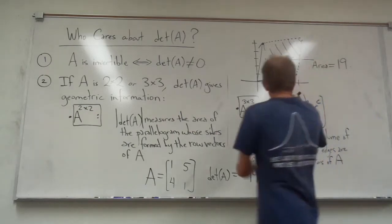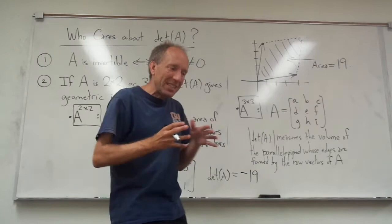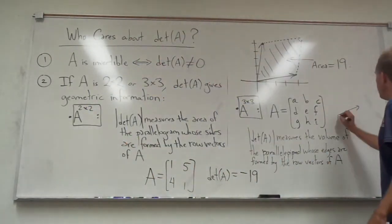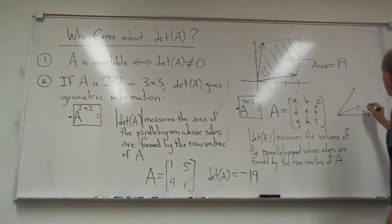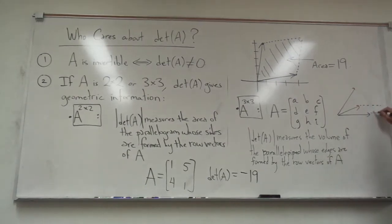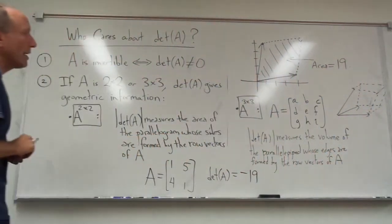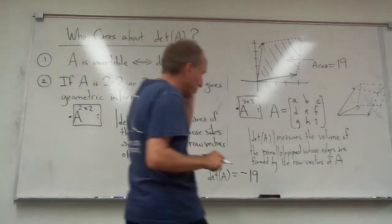Parallelepiped, whose edges are formed by the row vectors of A. You see, you have three rows to the matrix. That's going to give you three vectors in three-dimensional space. You might have a vector here, here, and here. And you can then extend these dotted lines showing how you can extend the picture and get basically a slanted parallelepiped. That volume is measured by this determinant.